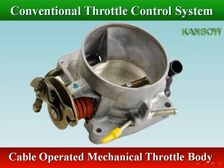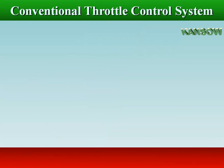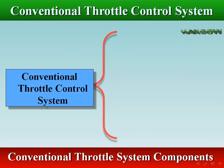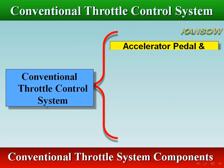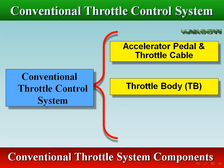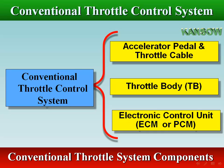Most throttle bodies are made of aluminum. The conventional throttle system consists of the accelerator pedal, throttle cable, throttle body assembly, and electronic control unit — ECM or PCM.